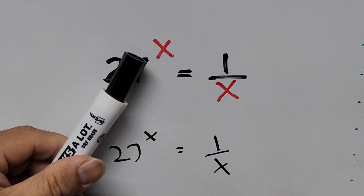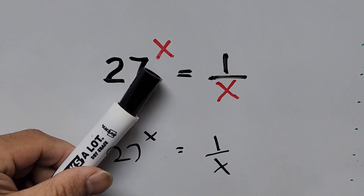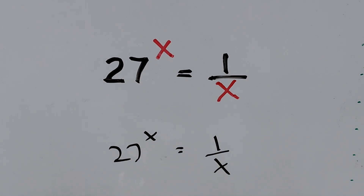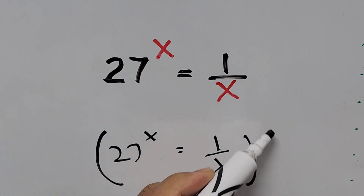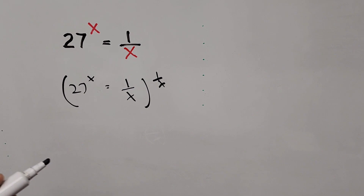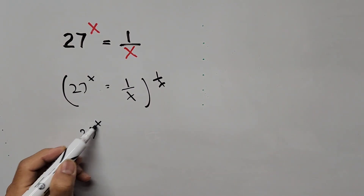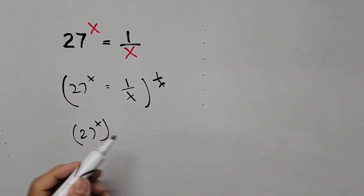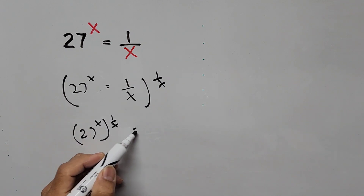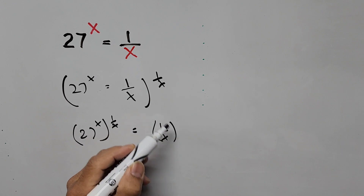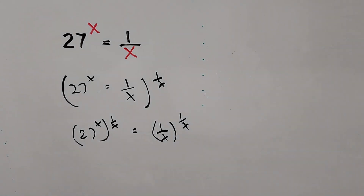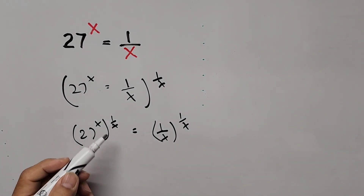If we get rid of the exponent x on the left-hand side, what are we going to do? We raise the whole equation to the reciprocal of x, that is, to the power of 1 over x. So the equation now becomes: 27 to the power of x, raised to 1 over x, equals the right-hand side 1 divided by x, raised to the power of 1 over x. So the left-hand side exponent is now cancelled.